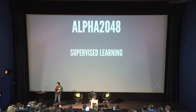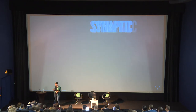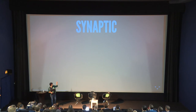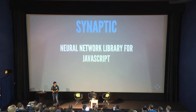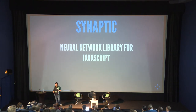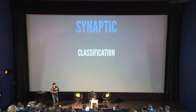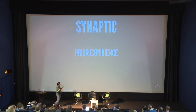I already gave a talk last year about machine learning with JavaScript, where I used a library called Synaptic. Synaptic is a neural network library for JavaScript — it's pretty easy to use and does classification mainly, which is also what I used in last year's project. I already had prior experience, which made it easier to start.